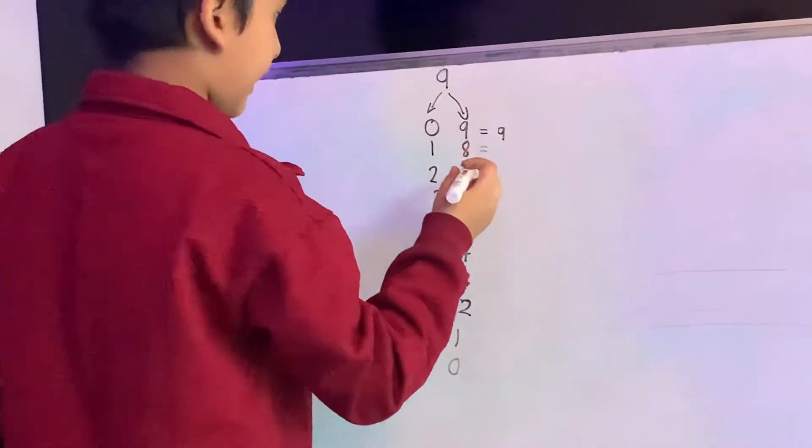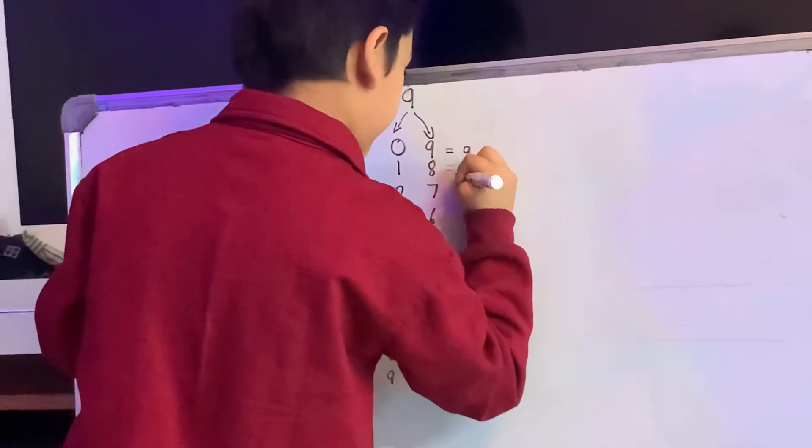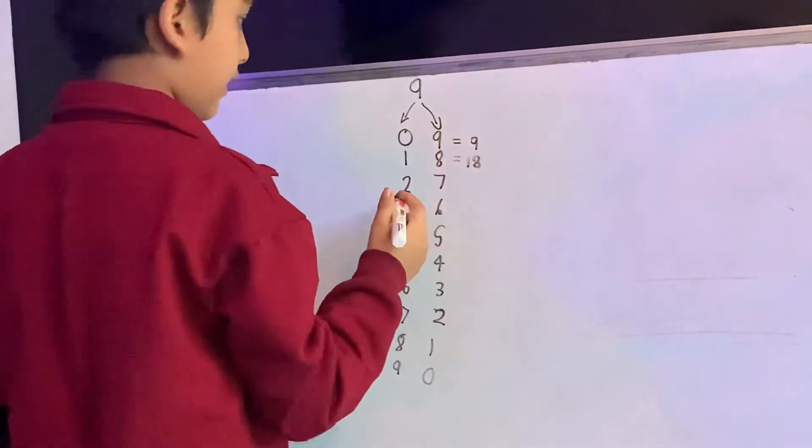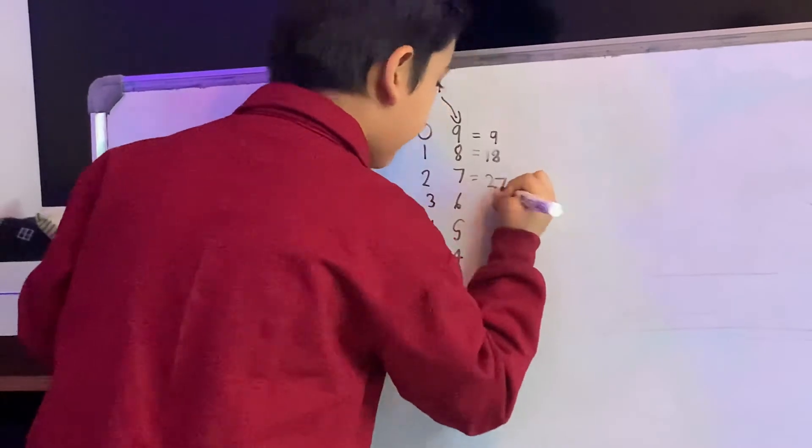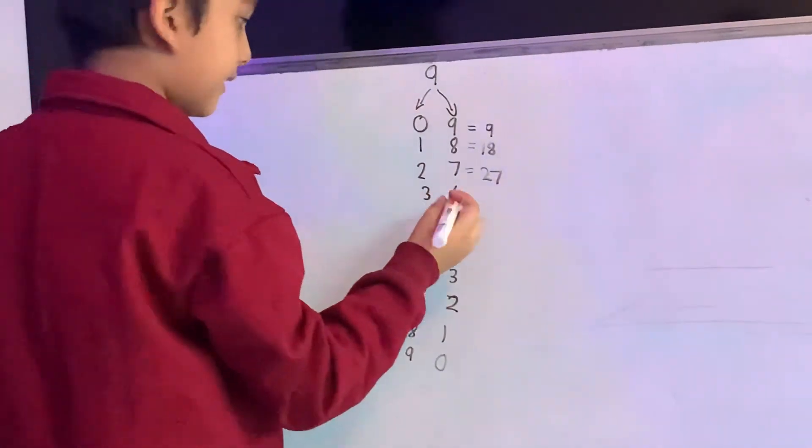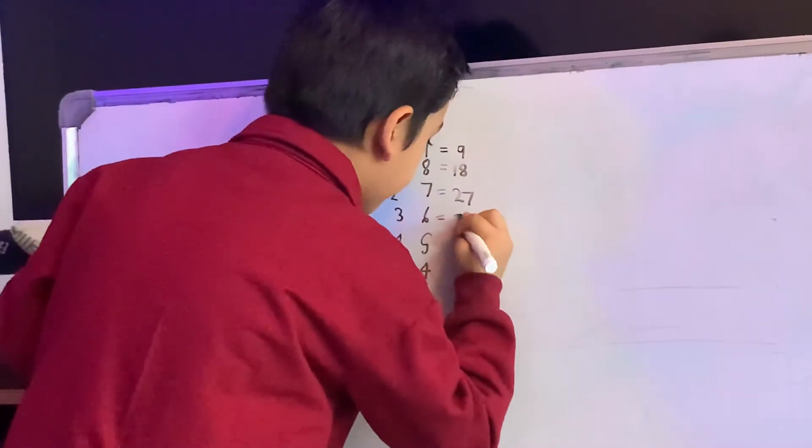1, 8 is equal to 18. And 2, 7 is equal to 27. And 3, 6 is equal to 36.